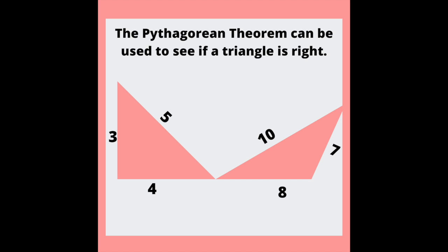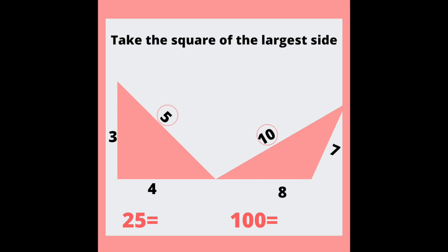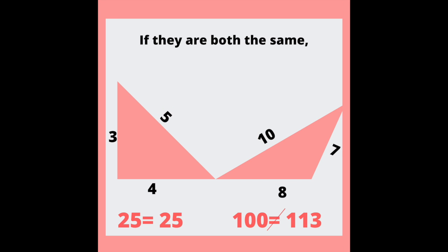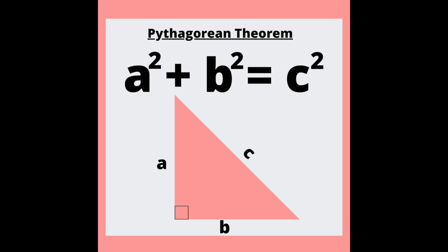The Pythagorean theorem can be used to see if a triangle is right. Take the square of the largest side and set it equal to the sum of the squares of the legs. If they are both the same, you have a right triangle in your lane.